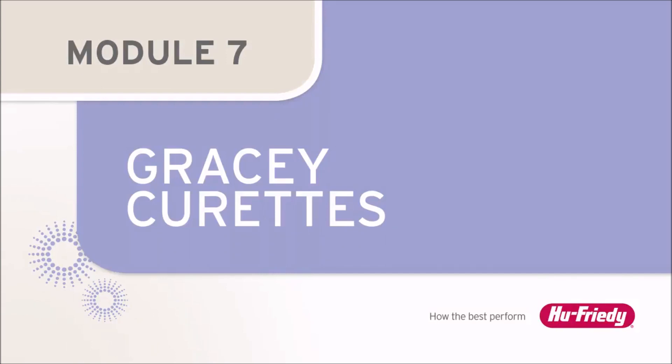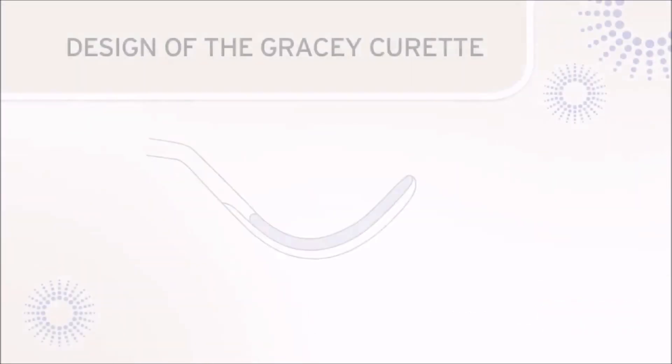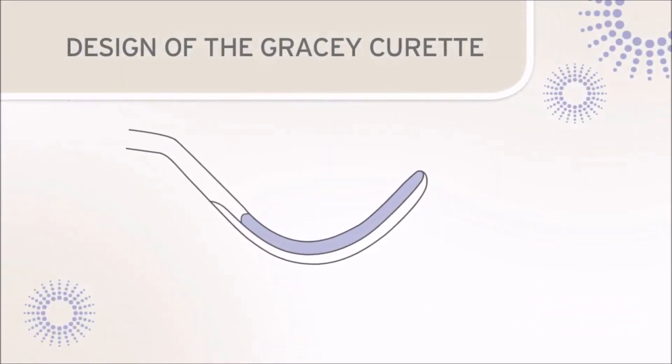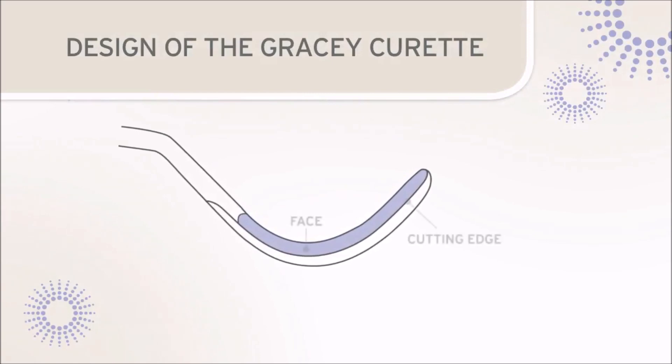Gracey curettes differ from sickle scalers and universal curettes as the facial surface of the Gracey blade slants downward at a 70-degree angle, creating only one functional edge to be sharpened.